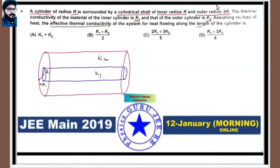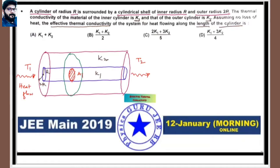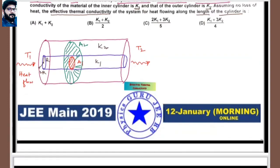Assume no loss of heat. We need to calculate the effective thermal conductivity of the system for heat flowing along the length of the cylinder. Temperature T1 is at one end and T2 at the other. A1 is the area of the inner cylinder and A2 is the annular cross-section of the outer cylinder.